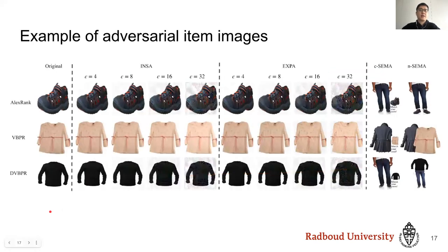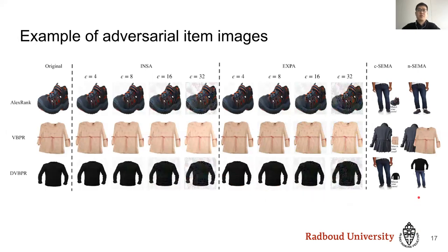Let's put all AIP attacks together and see what they look like. The figure is divided into four columns. The leftmost shows the original images. In the second and third columns we see INSA and EXPA. Note that promoted images with fewer artifacts are also very effective. We can also see that promoted images by CSEMA look very natural.